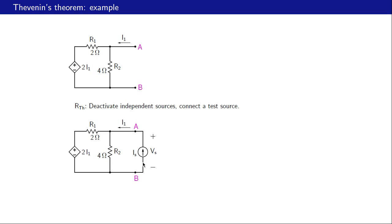We have connected a test current source, so we will find the ratio v-s divided by i-s. In this case i-s and i-one happen to be the same. Let us take one of the nodes as the reference node. If that is zero volts, then this voltage is two times i-one, which equals two times i-s. The other node voltage is the same as v-s. Now we have all the node voltages and can write a KCL equation to obtain v-s divided by i-s.